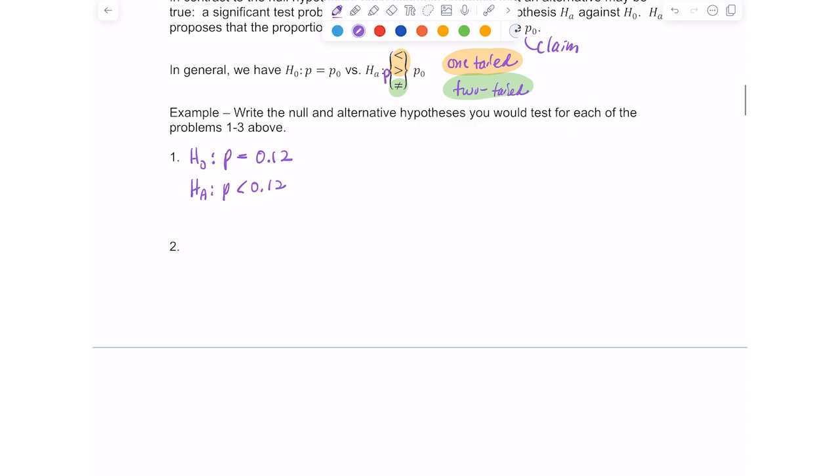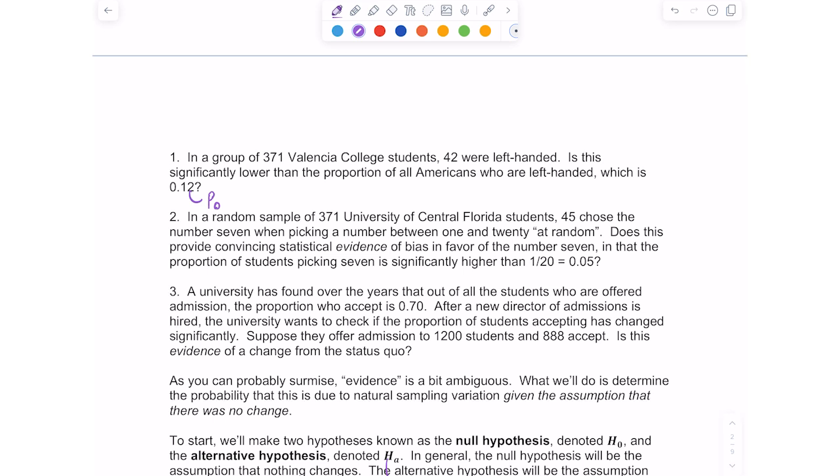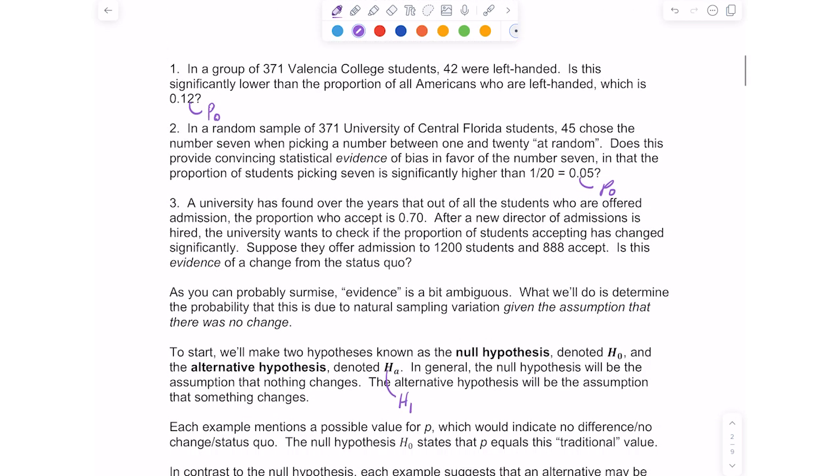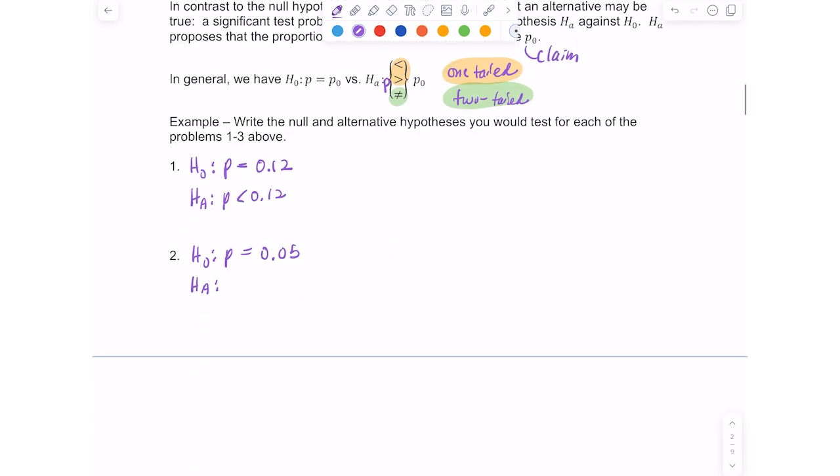For number two, in a random sample of 371 UCF students, 45 chose the number seven when picking a number between 1 and 20 at random. Does this provide convincing statistical evidence of bias in favor of the number seven, in that the proportion of students picking seven is significantly higher than one out of 20, 0.05? So the 0.05 is the claim being made. Here we know our null is going to say that the proportion of students picking seven is 0.05. But the alternative stated bias in favor of the number seven, proportion of students picking seven is significantly higher. So higher implies the proportion's greater than 0.05. These are both called one-tailed tests.